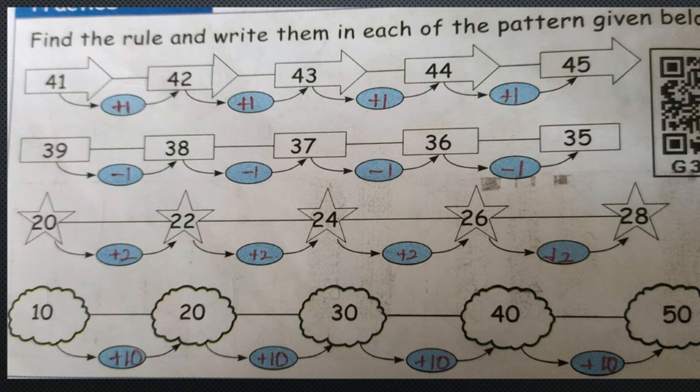Now we will see the second sum: 39, 38. It is decreasing — it decreases by 1, so minus 1. 39 minus 1 is 38, 38 minus 1 is 37, 37 minus 1 is 36, and 36 minus 1 is 35.